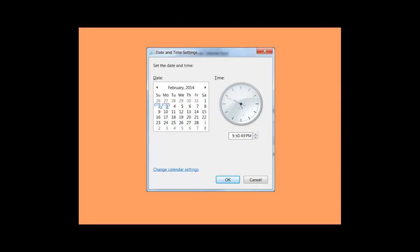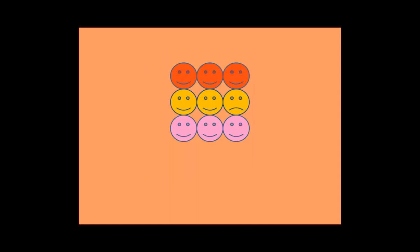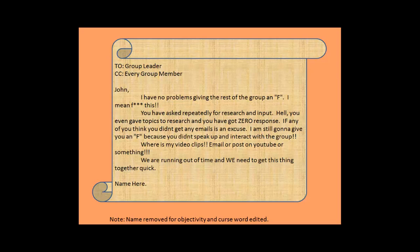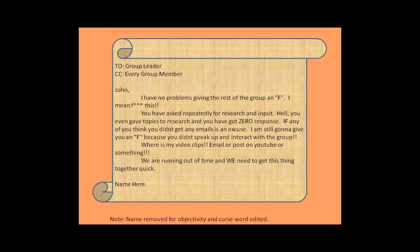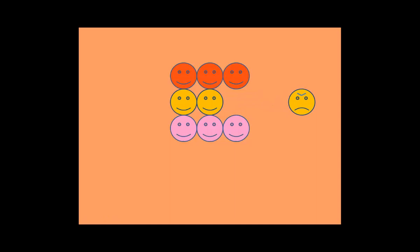One member, frustrated by video clips not sent and combined with previous discussions, sent out a mass email. He had made a conscious decision to be 'that guy' — the antagonist who creates conflict and spurs others to action. The email read: 'Hey John, I have no problems giving the rest of the group an F. I mean, F this. You have asked repeatedly for research and input. Hell, you even gave topics to research and you have got zero response. If any of you think you didn't get any emails as an excuse, I am still going to give you an F because you didn't speak up and interact with the group. Where's my video clips? Email or post something on YouTube. We're running out of time and we need to get this thing together.' Based on his grammatical tone, this member broke several accepted social norms and email etiquette by using cursing, threatening retaliation, overcapitalization of words, and extra punctuation syntax.